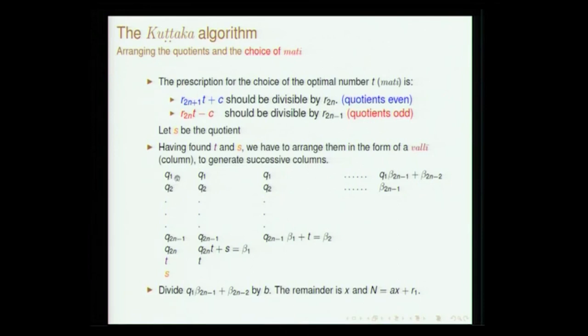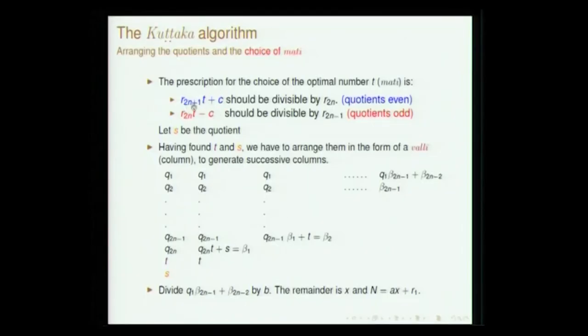We did a series of divisions and got a series of quotients. All that has to be done is arrange them one below the other: q1, q2, and so on up to qn. This arrangement is generally referred to as valli — valli means a sequence. All the quotients form the sequence. Then below that, you have to place this mati, and then another number s which is obtained by doing this operation.